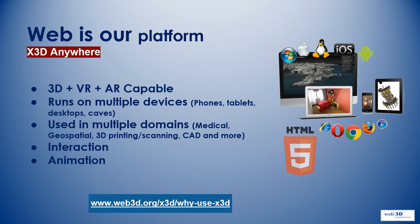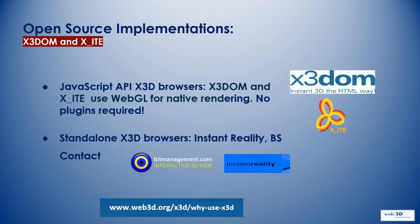We have two open source implementations that are widely used: X3DOM and X_ITE. They are JavaScript APIs that use WebGL for native rendering — no plugins required. We also have standalone browsers for environments such as caves, and the two implementations for standalone browsers are Instant Reality by Fraunhofer and BS Contact by Bit Management.